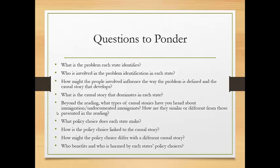Finally, think about who benefits and who is harmed by each state's policy choices. In every policy there are winners and there are losers. The goal of policy in a democratic system is that one group is not always the winner and one group not always the loser, but that winning and losing is dispersed across policies.